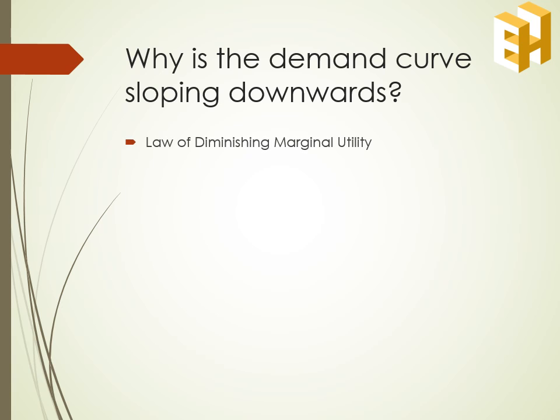First is the law of diminishing marginal utility. The law states that with every successive increase in the consumption of a commodity, the marginal utility derived from it decreases. Consumers are willing to pay a price for the commodity equivalent to its marginal utility. So with every increase in quantity consumed, the marginal utility decreases, and so does the price.